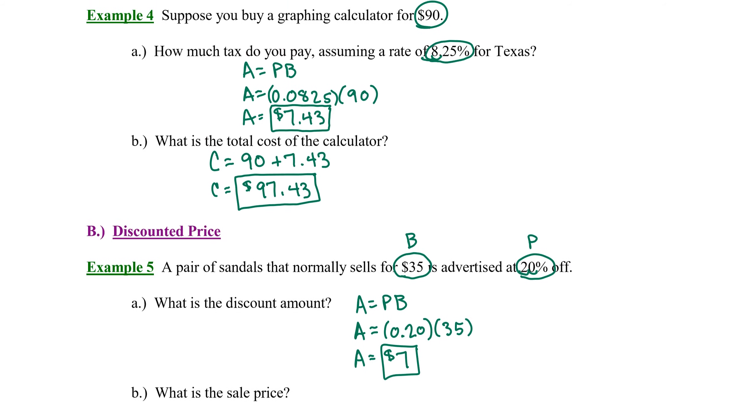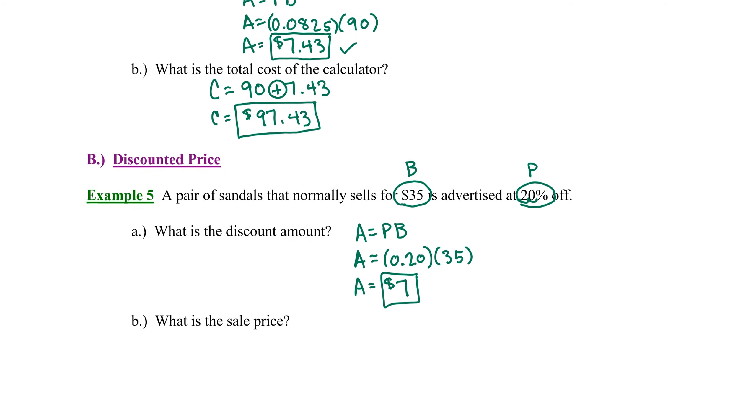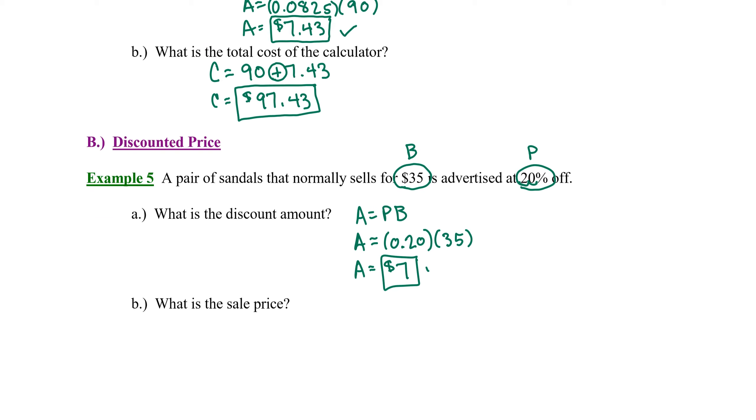This is similar to the sales tax problem above. We calculated a portion of the whole—an additional fee we added to the cost of the calculator. In the case of the discount price, we found a portion of the whole, but to figure out the sales price, I'm going to call it S. We take the original price of the sandals, $35,